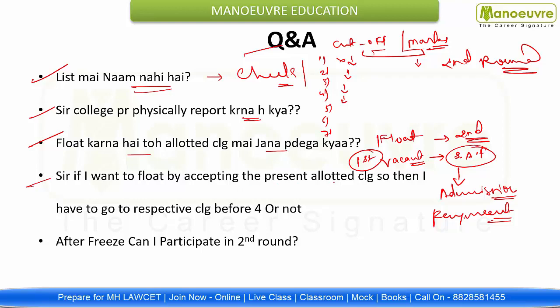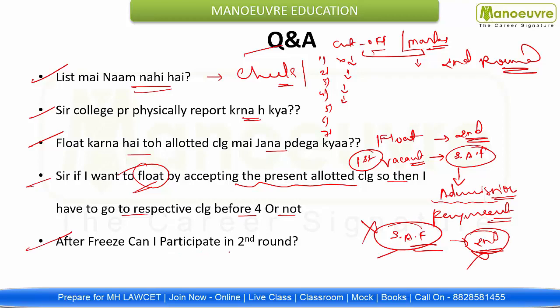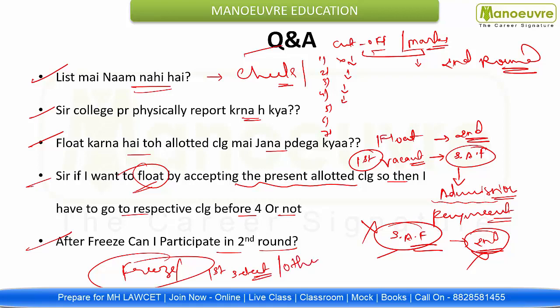Another question: If I want to float by accepting the present allotted college, do I have to go to the respective college before a certain date? Same answer: you are accepting the present college but want to float — you have to pay the seat acceptance fees, then you can move to the second round. Next question: After freeze, can I participate in Round 2? After freezing, you cannot participate in Round 2. If you froze, it means you selected whatever preference you received — you cannot participate in Round 2. If you want to participate in Round 2, you will have to cancel your Round 1 admission through the college login. This is all about the freeze and float options — feel free to ask in the comment box.